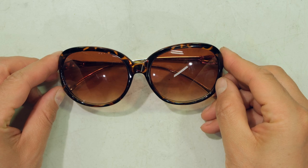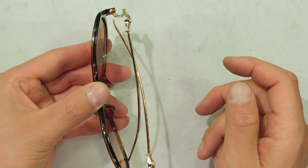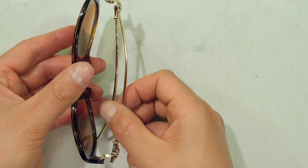Hi, in this video I'm going to demonstrate how to solve the problem of temples which are too loose. For example, if I turn these spectacles upside down, notice how these temples just flap out.